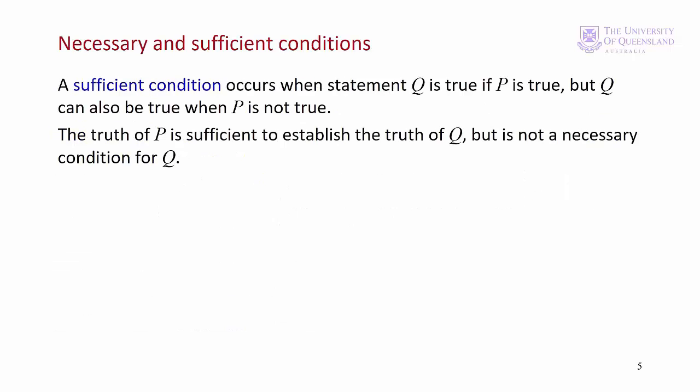P is a sufficient condition for Q when statement Q is true if P is true. But Q can also be true when P is not true. If we have P, then we know that we'll always have Q. But Q might also occur when we don't have P. For example, from our last example, the statement that a person is an aunt is a sufficient condition for the statement that that person is a female. So a person who's an aunt is a female, but females aren't necessarily all aunts.